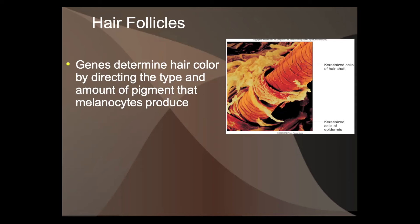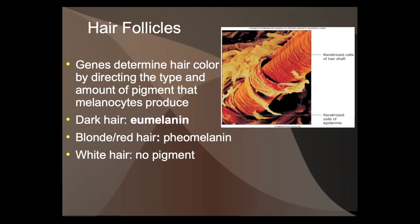Genes determine hair color. Different kinds of pigment cause different hair colors: dark hair has eumelanin, while blonde hair or red hair has pheomelanin. Several genes control pigment, giving a wide variety of hair colors — maybe 30 to 50 shades of brown, blonde, and red. White hair has no pigment at all; you're just seeing the protein.